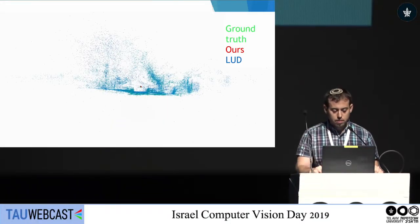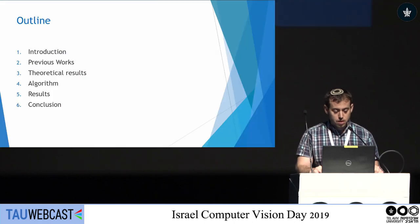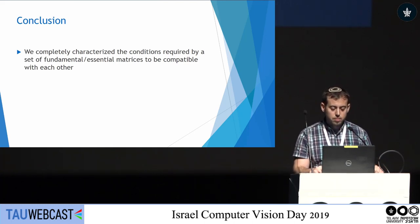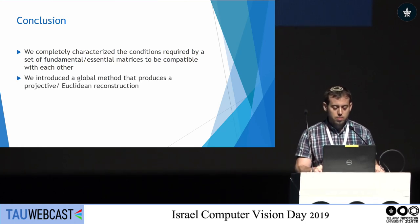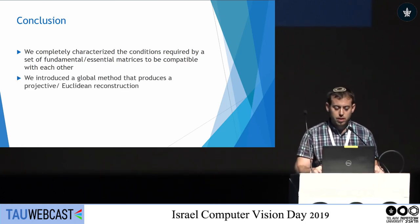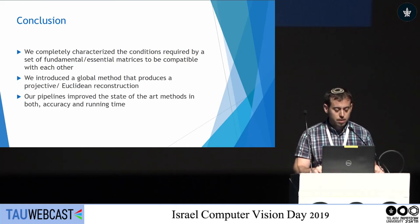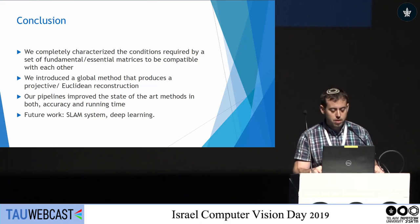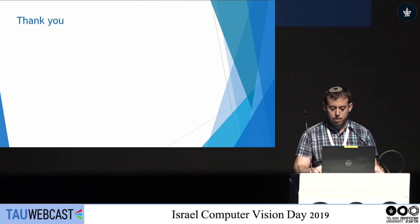To conclude: we completely characterized the conditions required for a set of fundamental or essential matrices to be compatible with each other. We introduced a global method that addresses both projective and Euclidean reconstruction. Our pipeline improves the state-of-the-art in both accuracy and running time. For future work, we would like to build a SLAM system using our method and combine our constraints in deep learning pipelines. Thank you.